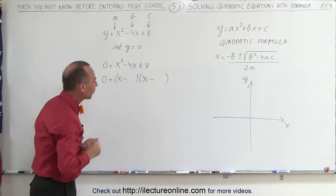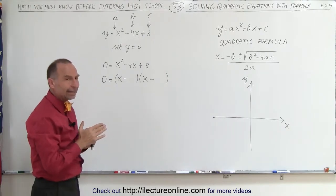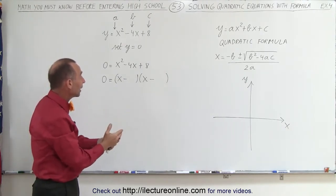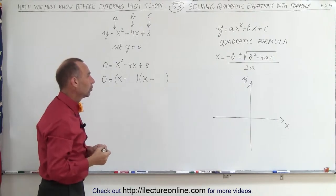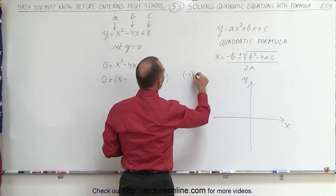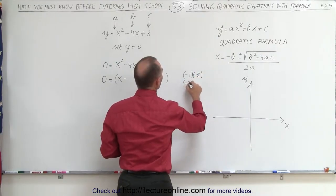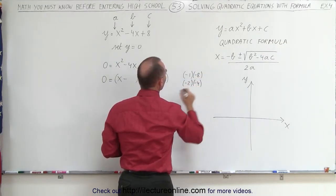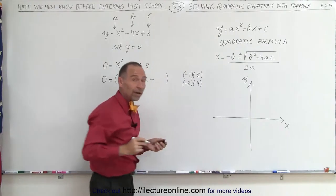So now we're looking for two numbers. When I multiply, I get positive 8, and when I add them together, I get a negative 4. So let's see what are the possibilities. We have negative 1 and negative 8. We have negative 2 and negative 4. And those are the only two possibilities.